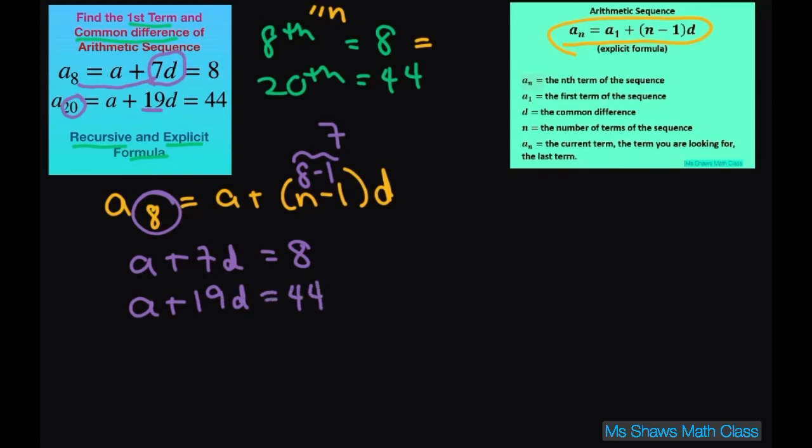And then we have a system of linear equations. So we're going to eliminate the a by subtracting. And this is going to give you 7 minus 19 is negative 12d and 8 minus 44 gives me negative 36. So d equals 3.